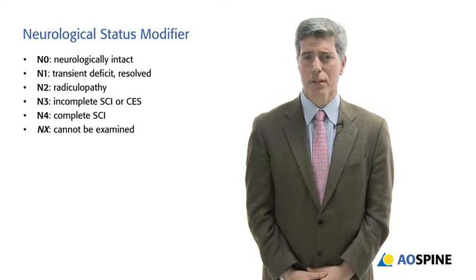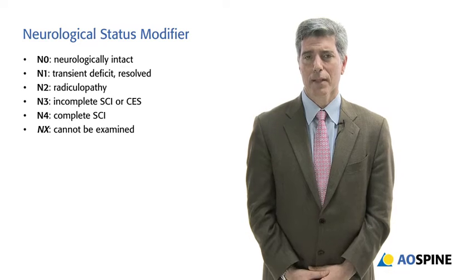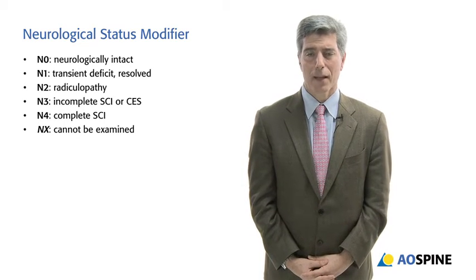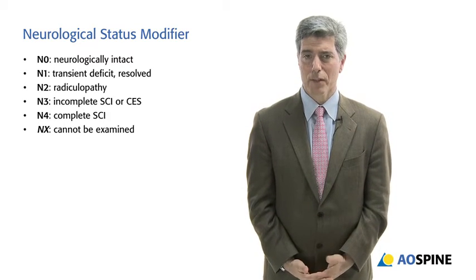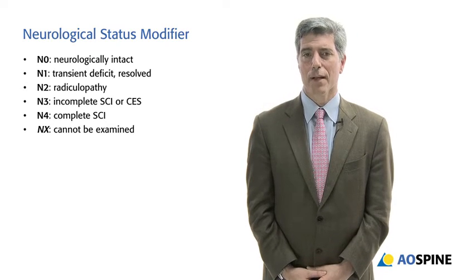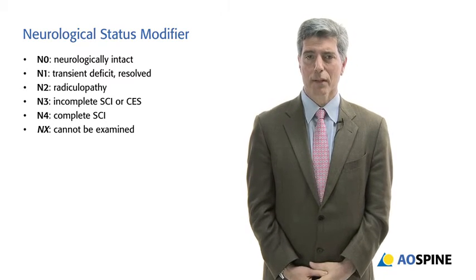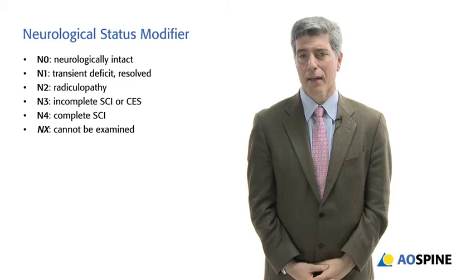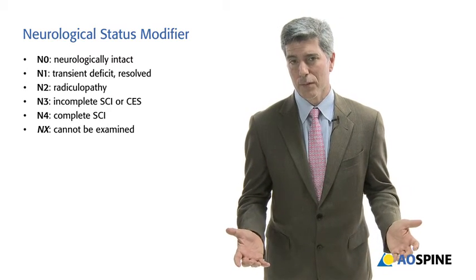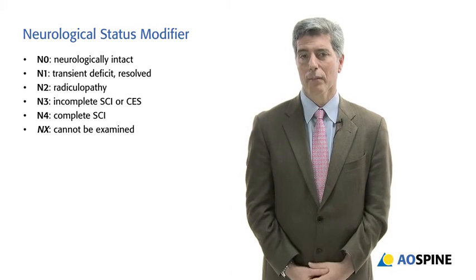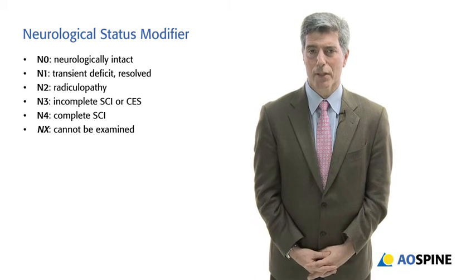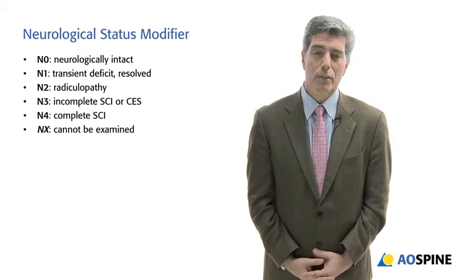What is new to this system is that we've given a neurologic status modifier. N0 means the patient is neurologically intact. N1 is a common scenario — you receive a history that the patient had weakness in the field, but over 10 or 15 minutes the weakness went away. That would be N1, because when you're examining the patient, they're neurologically intact.